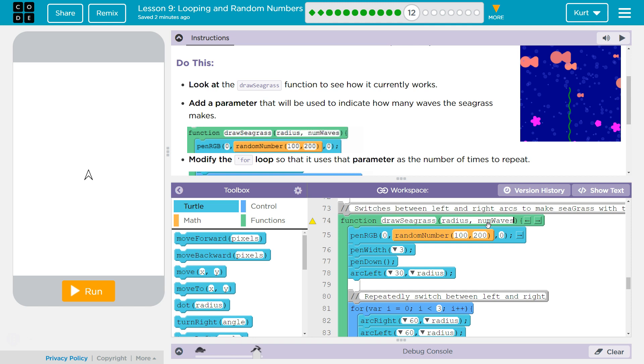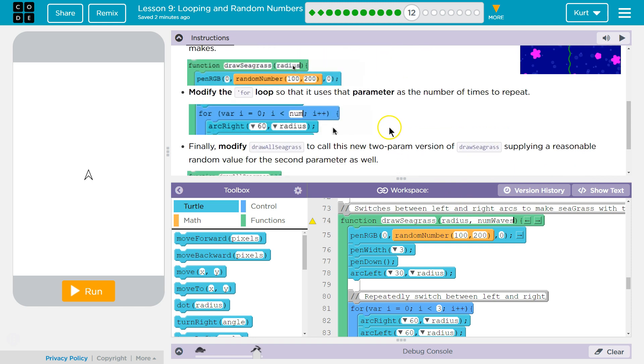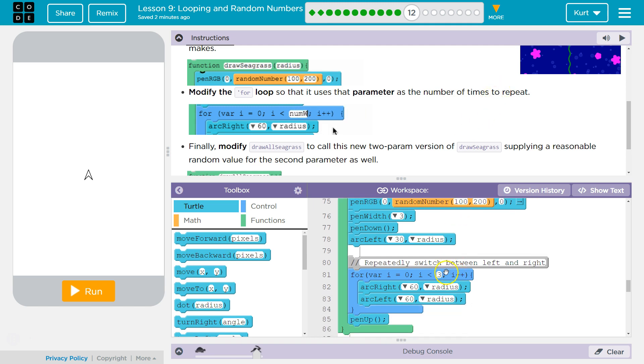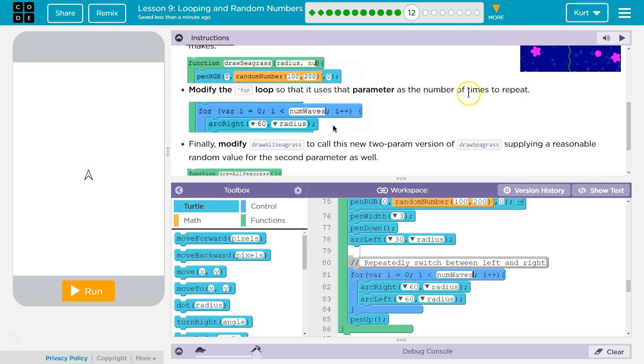Add a parameter that will be used to indicate, yep, we got that. Modify the for loop so that it uses the parameter as the number of times it repeats. Oh, that's super cool. So if I put this as numwaves, that's going to be the number of times it's going to run the loop, and that's going to be how many curves are in the grass.